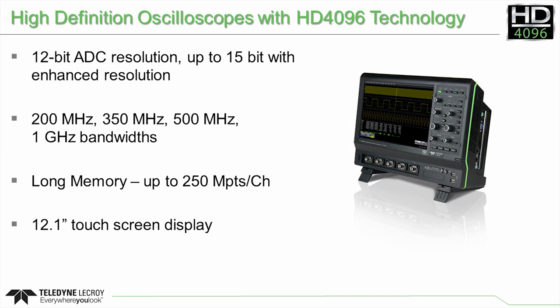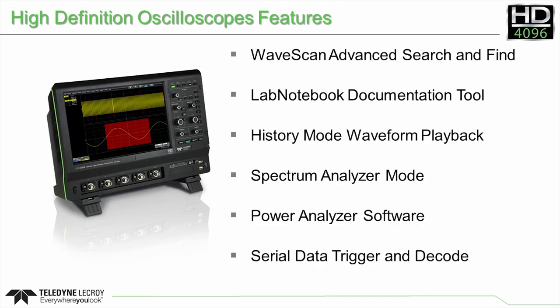Models are available with bandwidths from 200 MHz to 1 GHz and long memory up to 250 megapoints per channel. Each model features a large 12.1-inch touchscreen display. Beyond high-performance hardware, the high-definition oscilloscopes provide a comprehensive set of debug, analysis, and problem-solving tools that provide tremendous insight and shortened debug time.